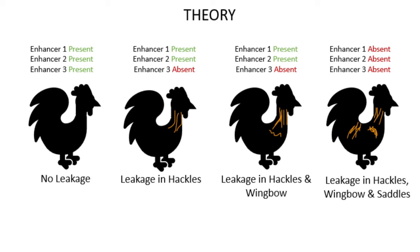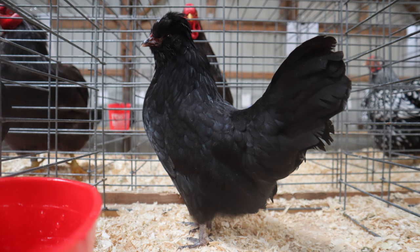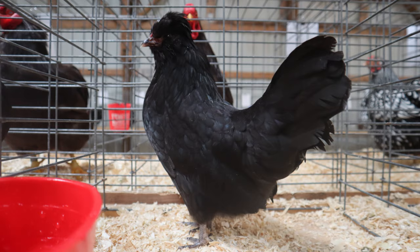The amount of leakage present on a bird can really vary, but it is something that can be selected against. Breeding birds with less or no leakage together should create birds with less or no leakage. Hens that are homozygous for E tend to be almost entirely, if not entirely, black — sometimes without additional black enhancers — but this certainly isn't always true of the males.